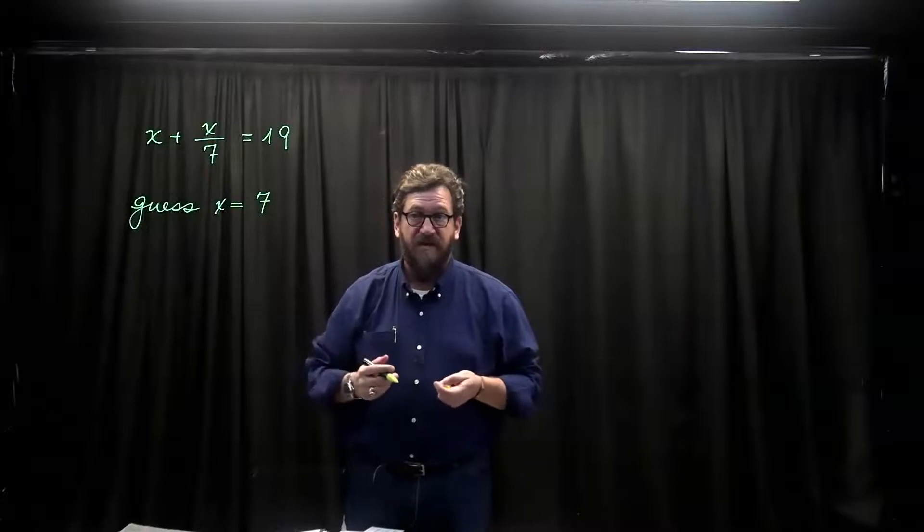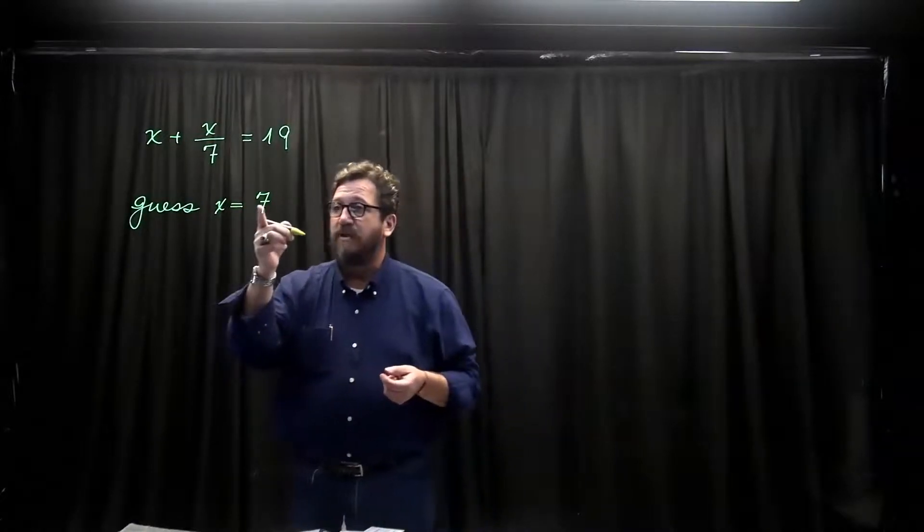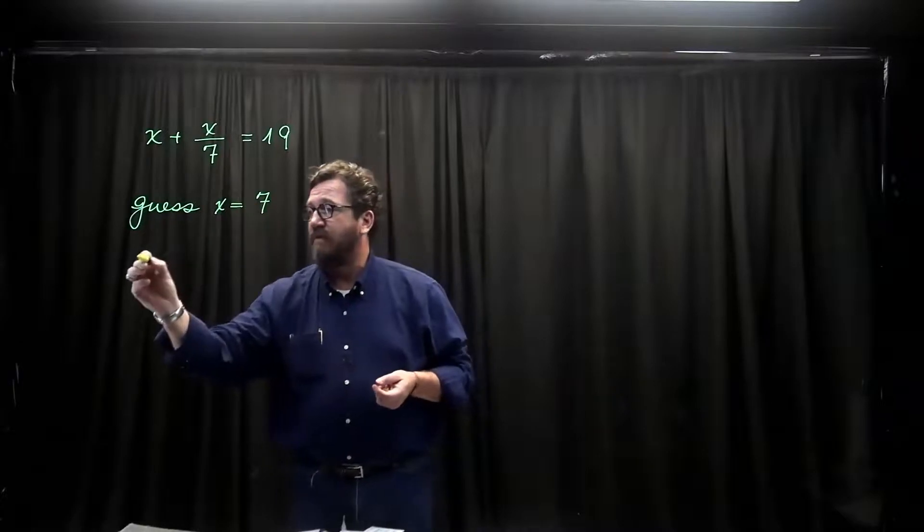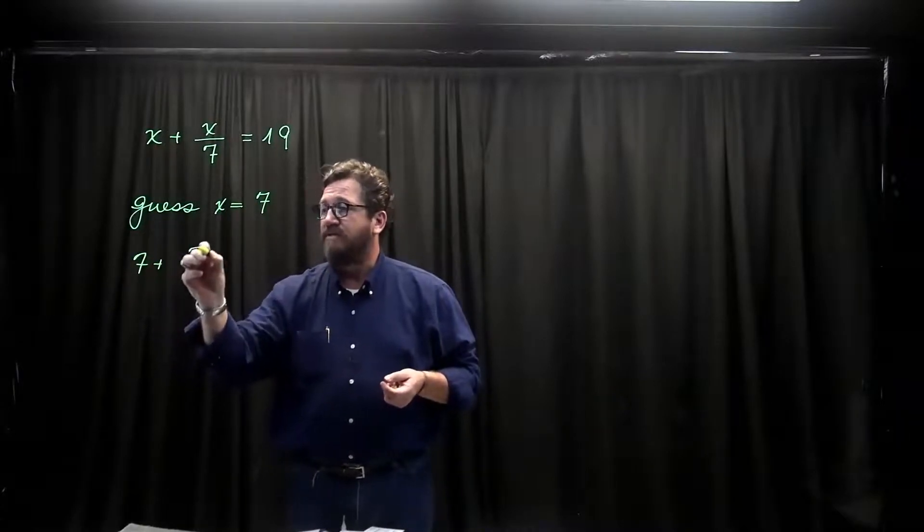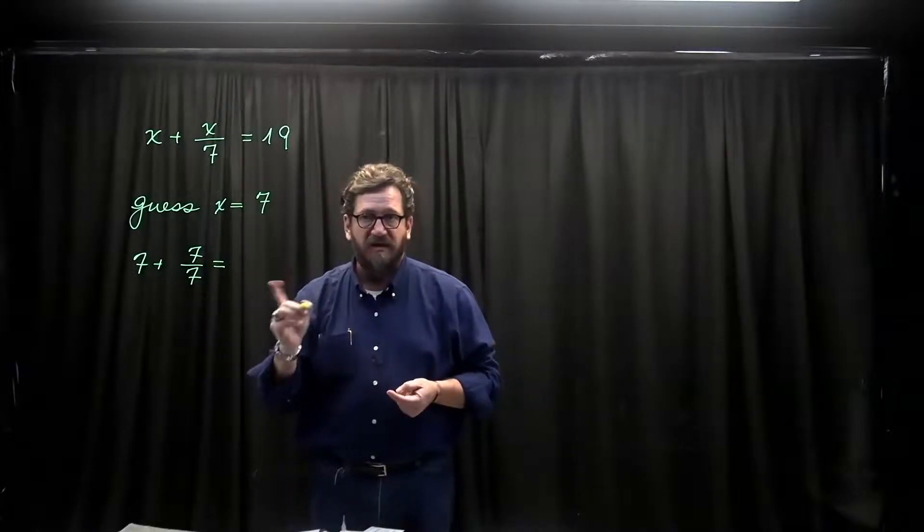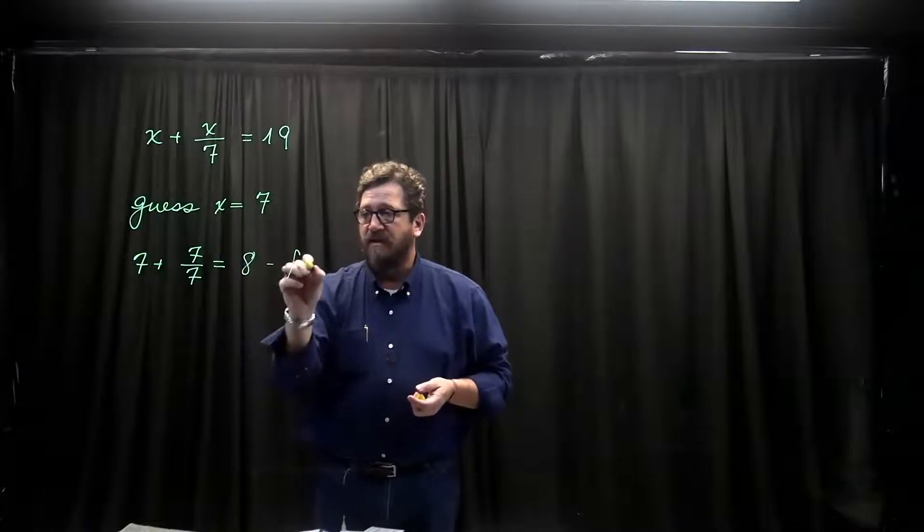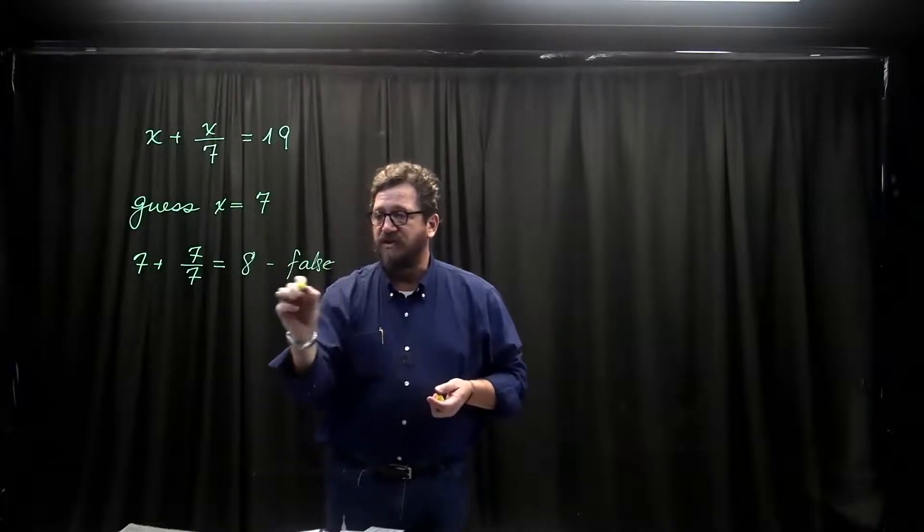Because I don't want to have to do any hard arithmetic in my head. And if I have to divide by seven I want a multiple of seven up here. So now plug your multiple of seven in. And we have seven plus a seventh of seven. And this is going to give us an incorrect answer. It gives us eight. This is a false position.